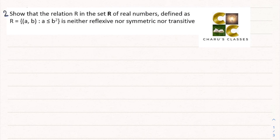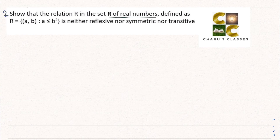Hello students, welcome to Charu's classes. Today we are starting question number 2, exercise 1.1, Relations and Functions, Class 12. Show that the relation R in the set R of real numbers, defined as R = {(a,b) such that a ≤ b²}, is neither reflexive nor symmetric nor transitive.